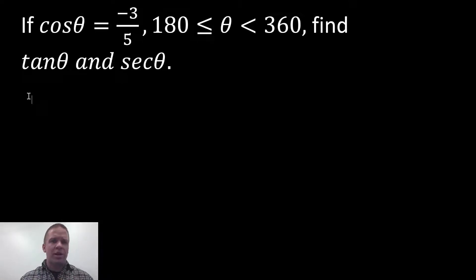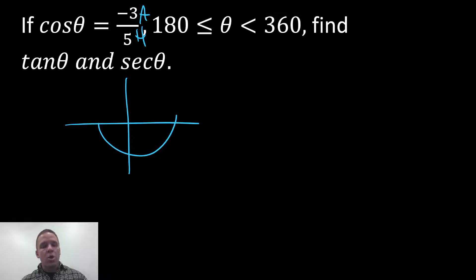Let's first draw a triangle here. I know that cosine is adjacent over hypotenuse, and I could draw a reference triangle on my XY-coordinate plane somewhere between 180 and 360, which is somewhere in here. Well, if it's negative, I know that it's got to be in my third quadrant because in the fourth quadrant, I know that cosine is positive.